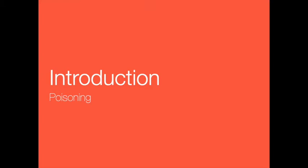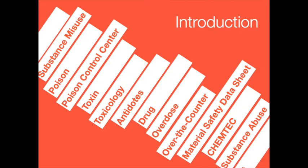We're talking chapter 15: poisoning. A poison is any substance that causes injury, illness, or death if it enters the body. A person can be poisoned by ingesting or swallowing poison, breathing it, absorbing it through the skin, or by injecting it into the body. In 2007, poison control centers received more than 2.4 million calls about people who had come in contact with a poison. About 90 percent — 2.1 million — of these poisonings took place in the home, and half of those, 1.5 million, involved children under the age of six.